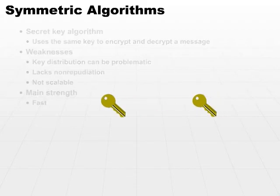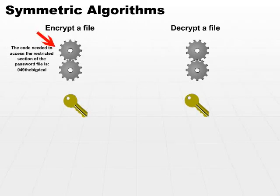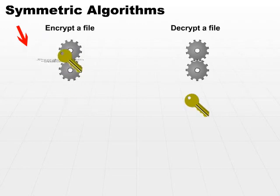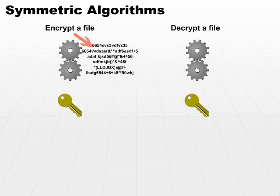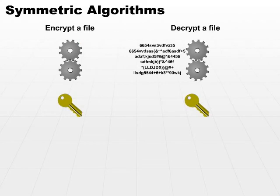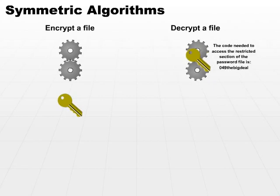Here is what a symmetric algorithm looks like. On the left-hand side we see the encryption mechanism. To encrypt a file, you take plain text and pass it through the algorithm with a key. The algorithm uses the key to transform plain text into ciphertext. You then send the ciphertext to the receiver, who takes it, runs it through the algorithm with the same key, and produces the original plain text file.